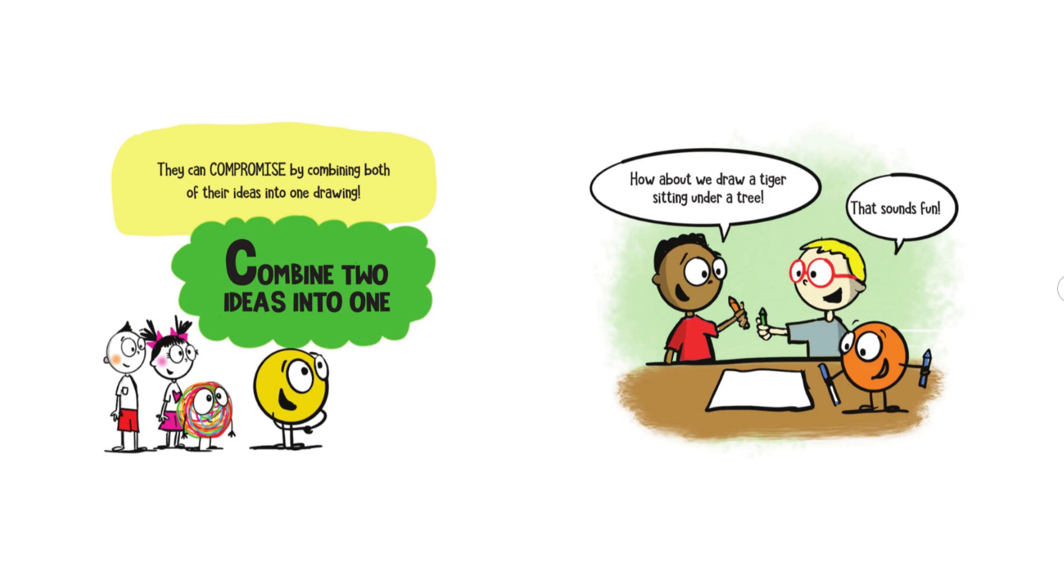They can compromise by combining both of their ideas into one drawing. Combine two ideas into one. How about we draw a tiger sitting under a tree? That sounds fun.